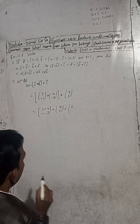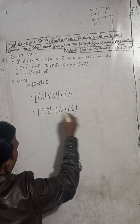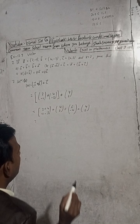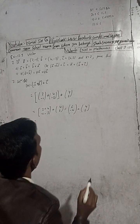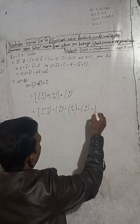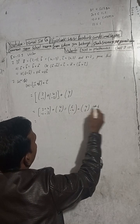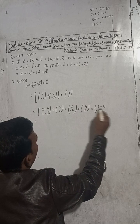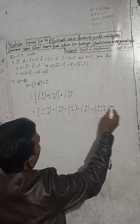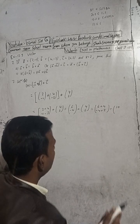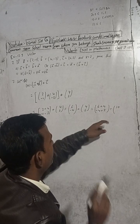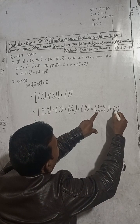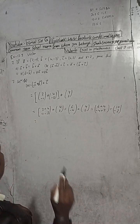So (a vector plus b vector) plus c vector equals (10, −2). And this is equal to a vector plus (b vector plus c vector), which also equals (10, −2). Therefore LHS equals RHS and the associative property of vector addition is proved.